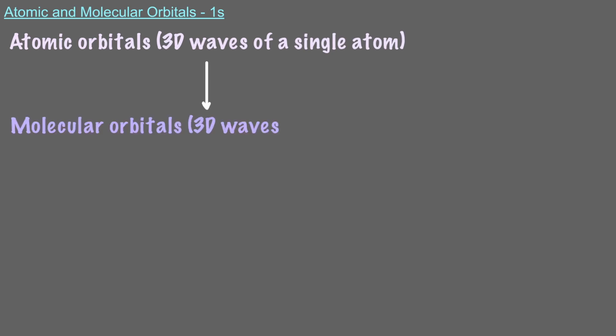In a previous video, we discussed 3D waves and how they interfere. In this video, we're going to build on this knowledge and talk about how atomic orbitals, 3D waves of a single atom, combine to make molecular orbitals, 3D waves with two nuclei.